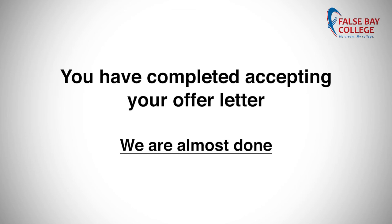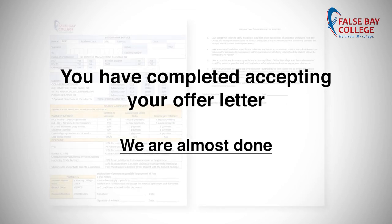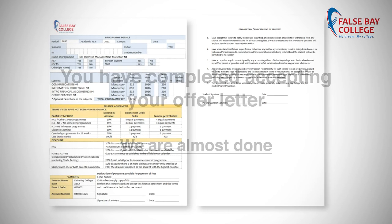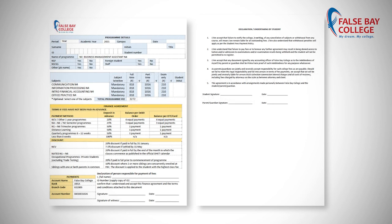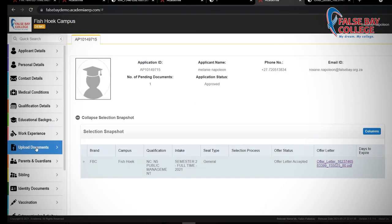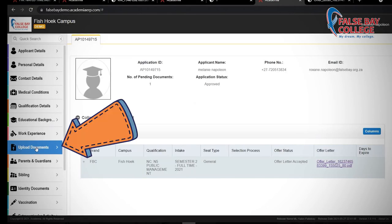You have completed accepting your offer letter. We're almost done. The college will now send you an addendum via email. The addendum is also known as the Program Registration Form. You need to print, sign and return this letter with the proof of payment or the white bursary slip to the application portal.